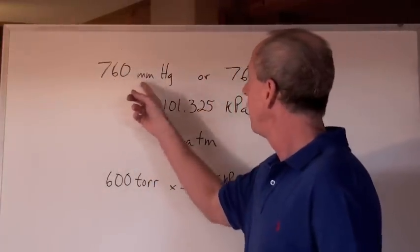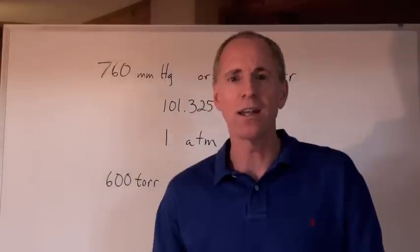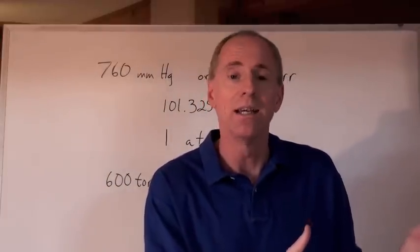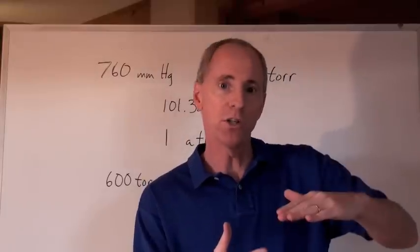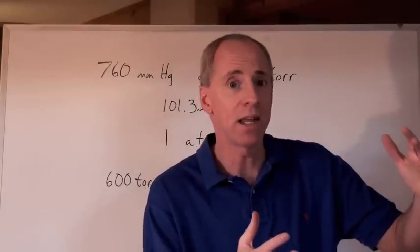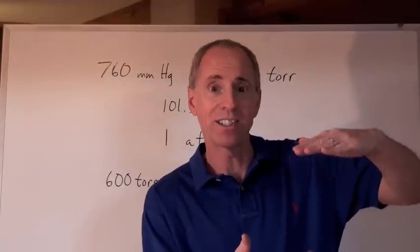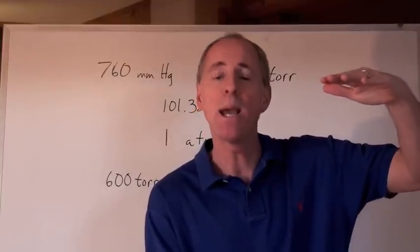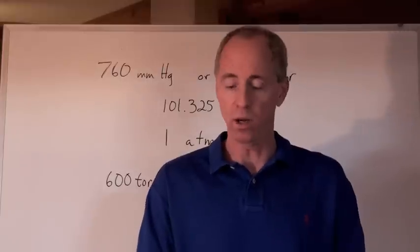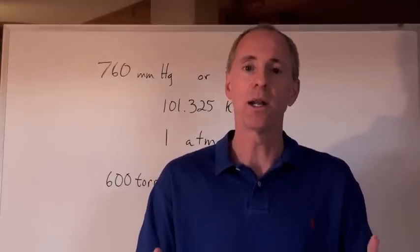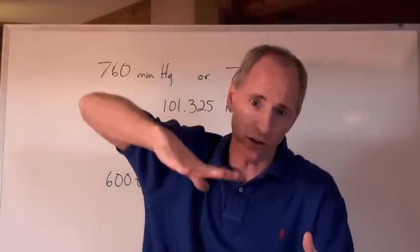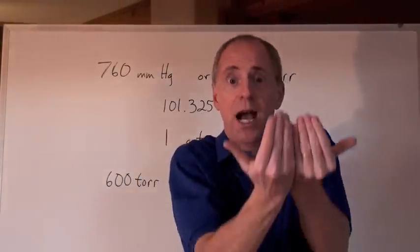760 millimeters of mercury, what is that number? A long time ago, Italian guy Torricelli found that mercury would rise up in an evacuated chamber that didn't have any air molecules in it, about 760 millimeters at sea level. And so he said, at sea level, here's what I understand: that the air is exerting a force on top of the mercury, which is pushing it up the column.